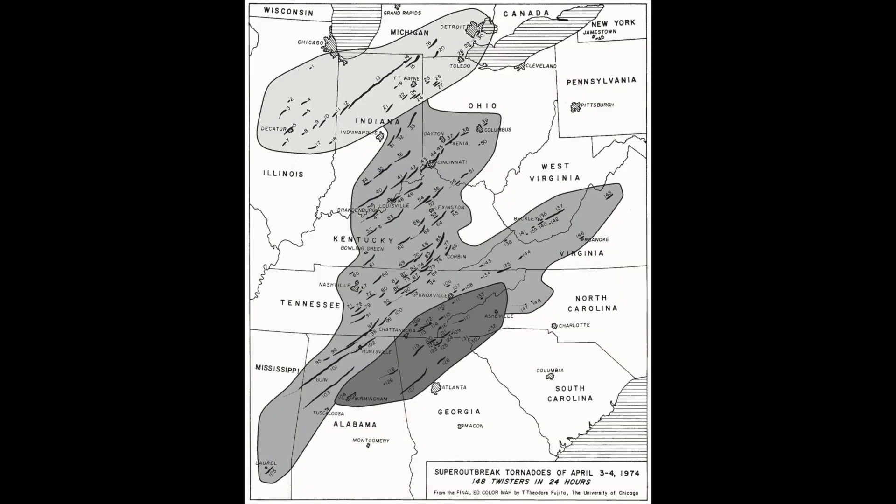Today we are going to talk about the 1974 Xenia, Ohio tornado — the F5 tornado that occurred as part of the super outbreak on April 3rd and April 4th of 1974. That super outbreak had over 140 tornadoes across 13 states, including Canada. And this F5 in Xenia was actually the highest rated of all the tornadoes of that event.